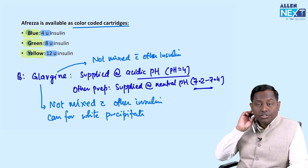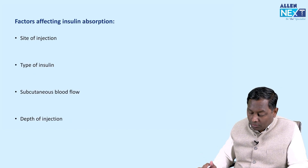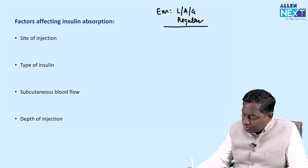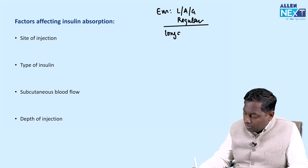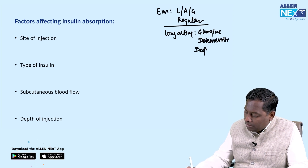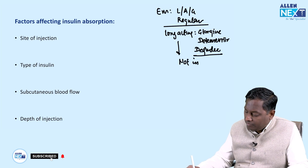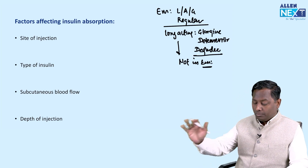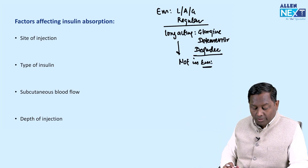In emergency situations, you use shorter acting insulins: Lispro, Aspart, Glulicine, and also Regular insulin. Longer acting insulins like Glargine, Detemir, Degludec, and NPH are never preferred in emergencies because their onset of action is very slow and they can produce prolonged hypoglycemia. Therefore, in emergency conditions, longer acting insulins are not used.